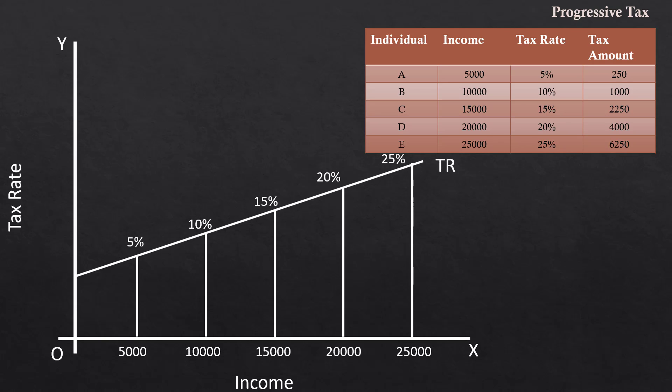Look at this graph. It brings out the relation between tax rate and income. The curve TR is sloping upwards. It shows the tax rate increases with increase in income.